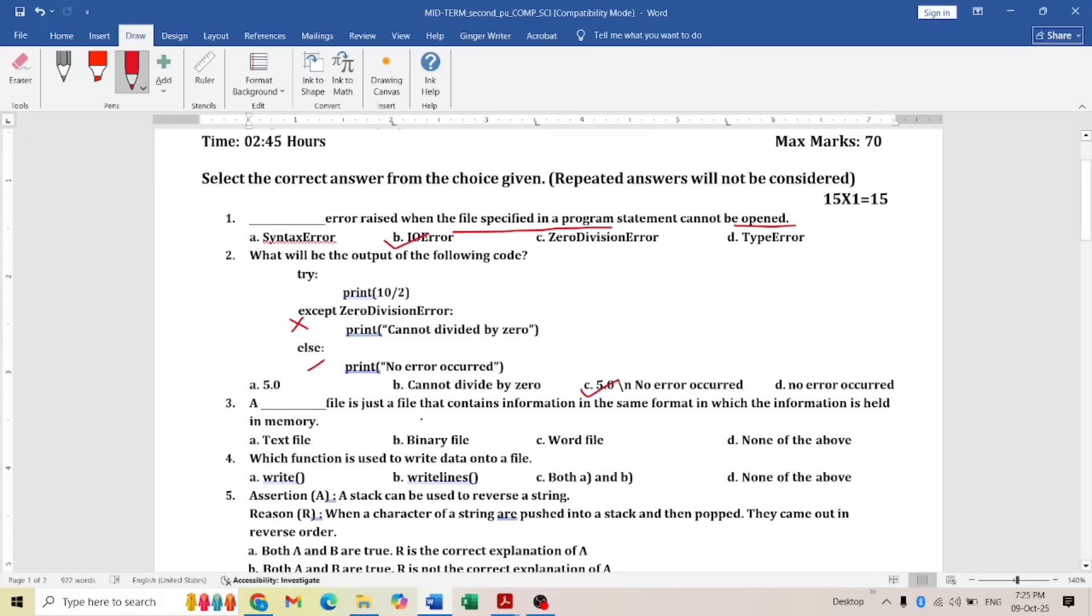The third question is: a dash file is just a file that contains information in the same format as the information is held in memory. The memory and the text file have the same format as binary file option. Next question: which function is used to write data onto the file? Both write and writelines will write, so both A and B.